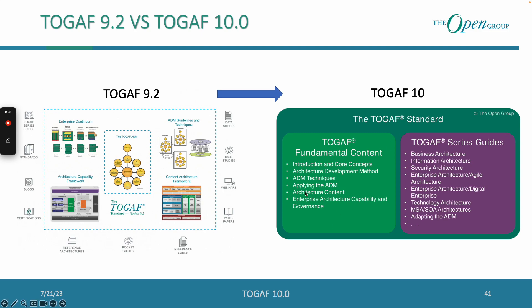The main big changes are not mainly in the content itself, but rather in the restructuring of it. As you can see here, it starts with introduction and core concepts, architecture development method (ADM), guidelines and techniques — divided into ADM techniques and applying the ADM. Enterprise continuum and content architecture, architecture content, and also architecture capability framework, which they renamed to enterprise architecture capability and governance. The TOGAF ADM is listed as a second architecture development method.